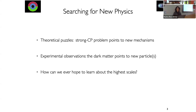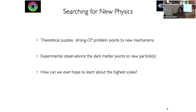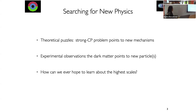What I'll focus on from the theory side is the theoretical puzzle of the strong CP problem, which points us to new mechanisms and particles to resolve it. Experimentally, we know that there is dark matter and potentially a bigger dark sector that completely dominates the energy density in our universe. We also think there have to be new physics at very high scale — we don't understand how gravity and the standard model ultimately fit together.